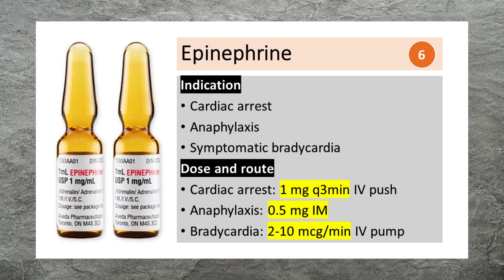Epinephrine is used to treat cardiac arrest, anaphylaxis, or symptomatic bradycardia. It can be given as a rapid IV push of 1 mg every 3-5 minutes during cardiac arrest. For anaphylaxis, 0.5 mg IM; for symptomatic bradycardia, a 2-10 mcg per minute infusion.